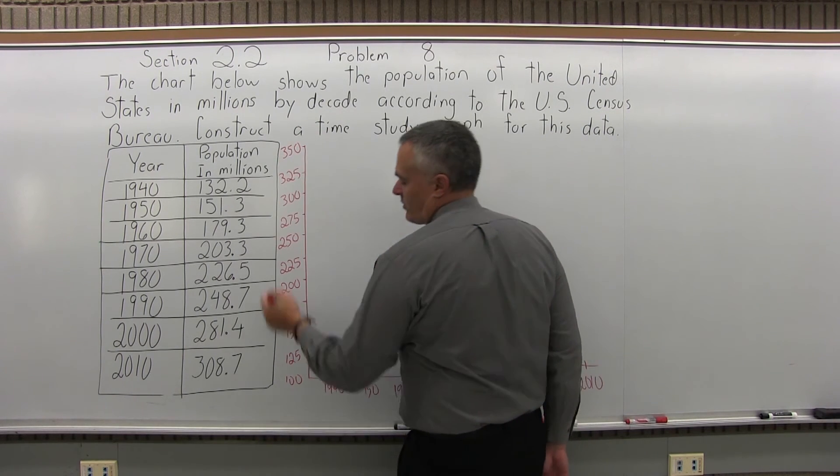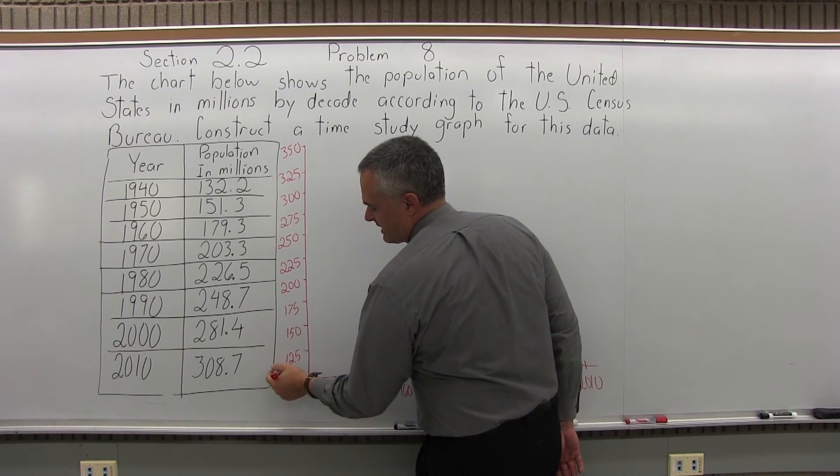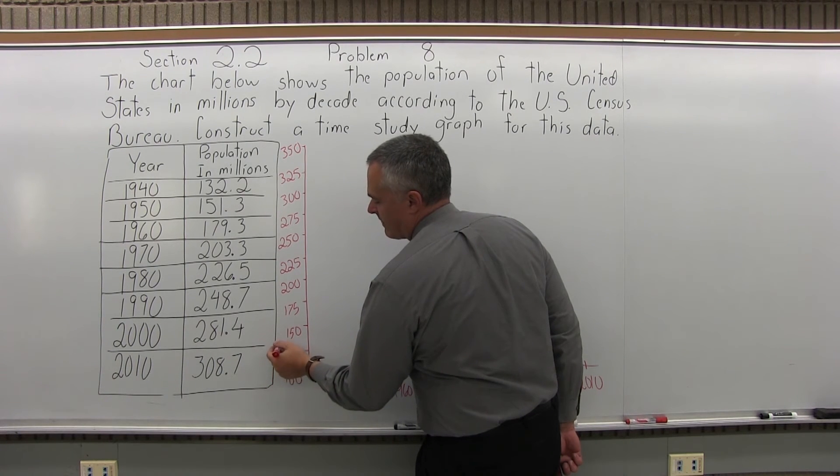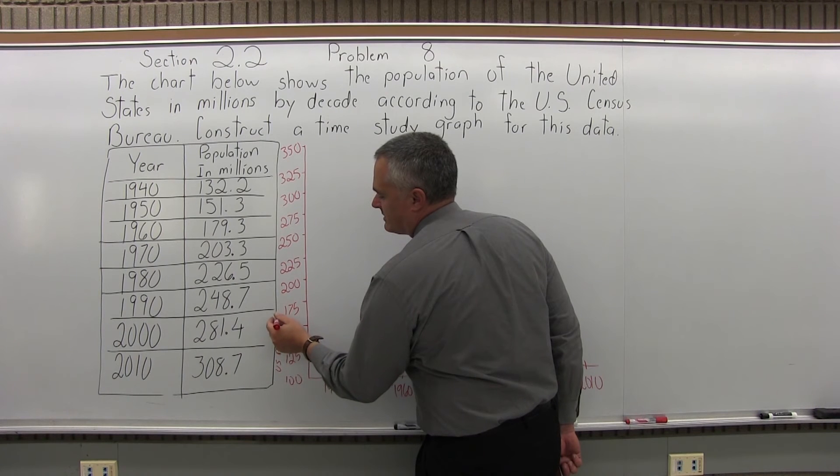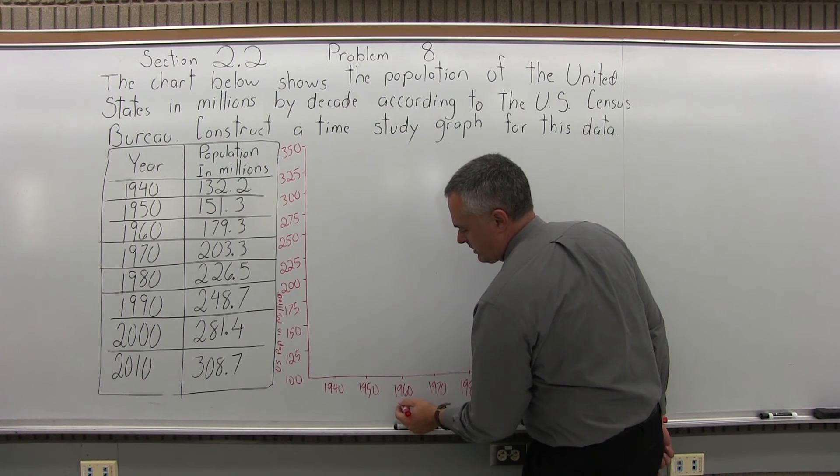And we can label this, I don't have quite enough room, I'll see if I can sneak it in the side here. The U.S. population in millions, and on the bottom we'll put year.